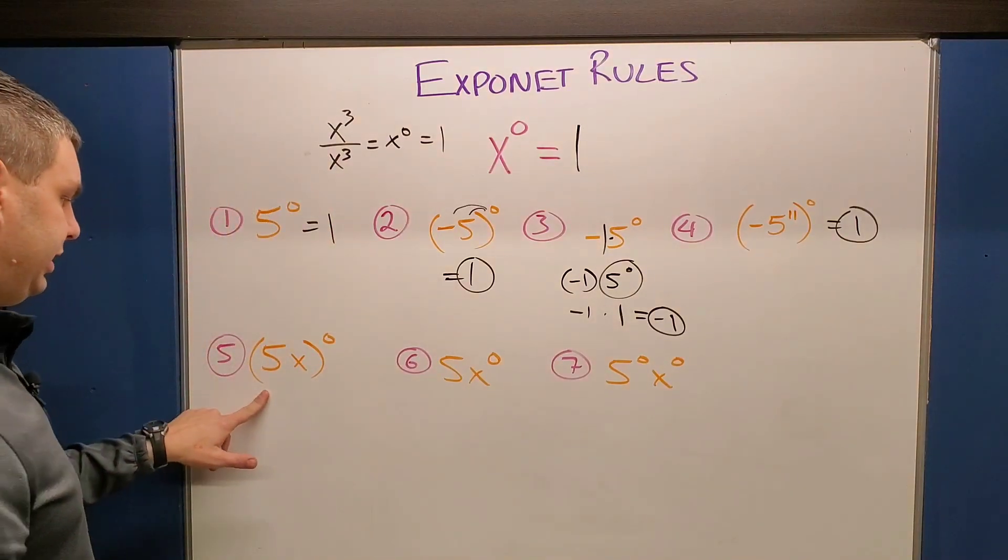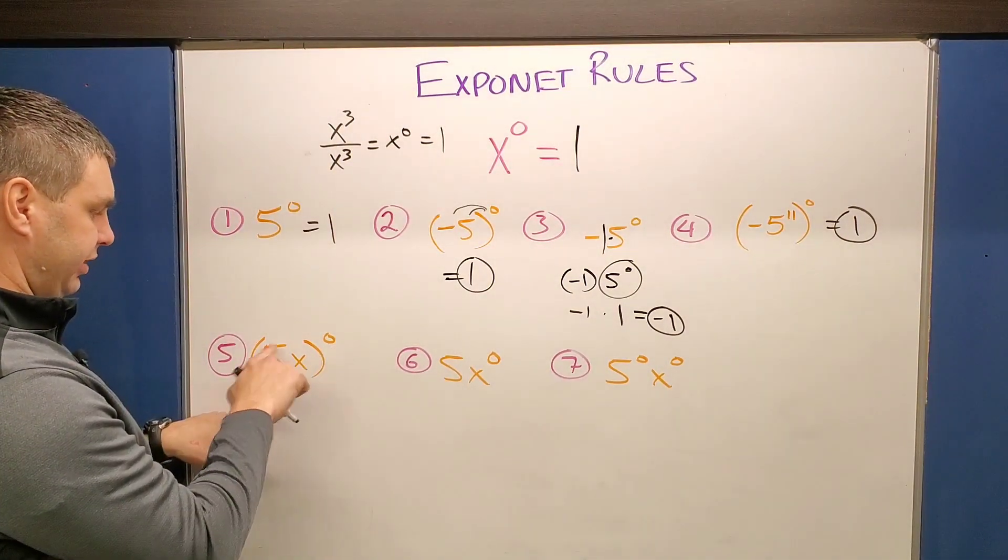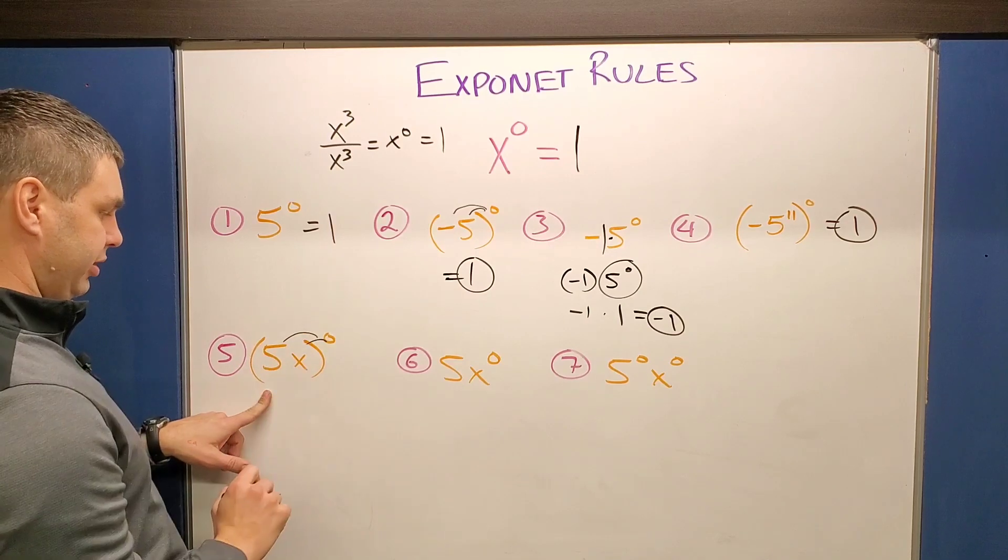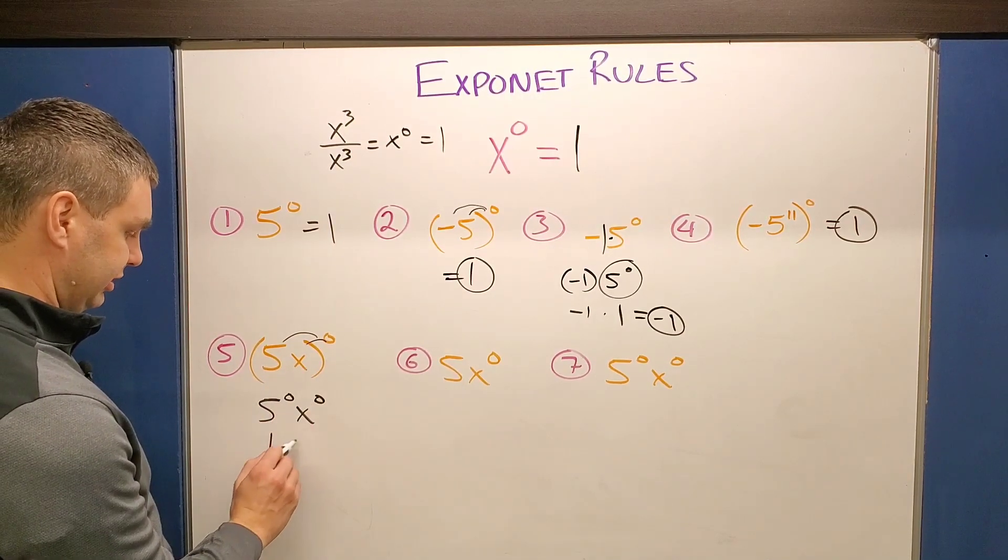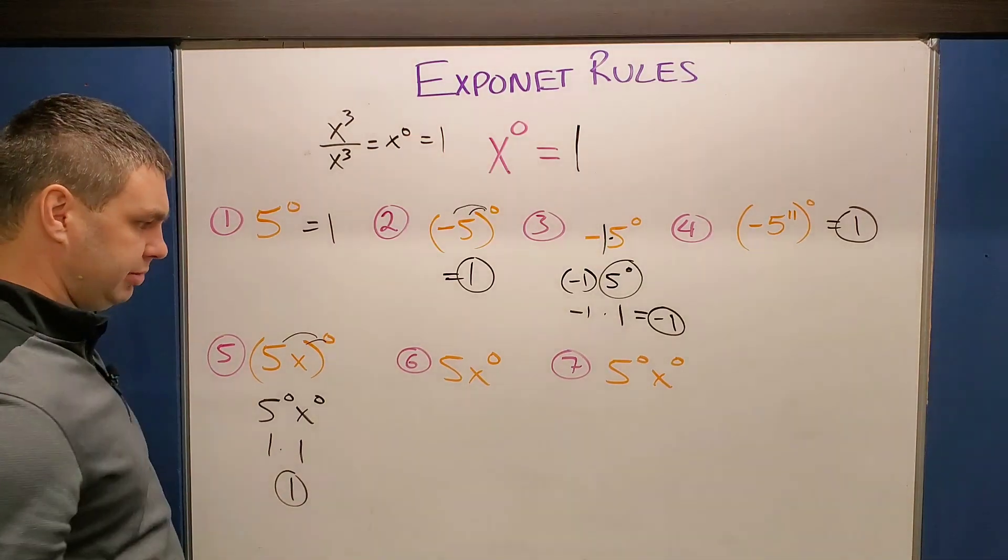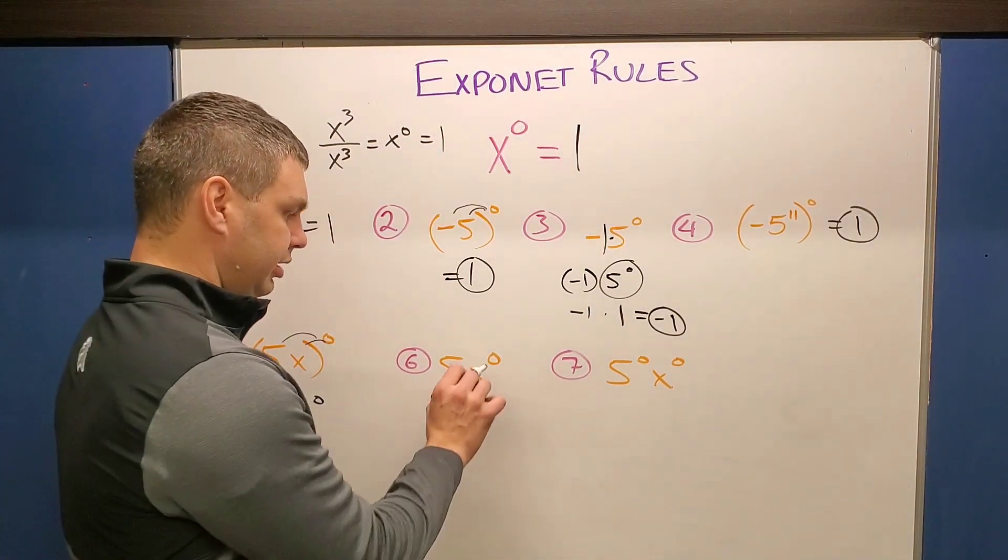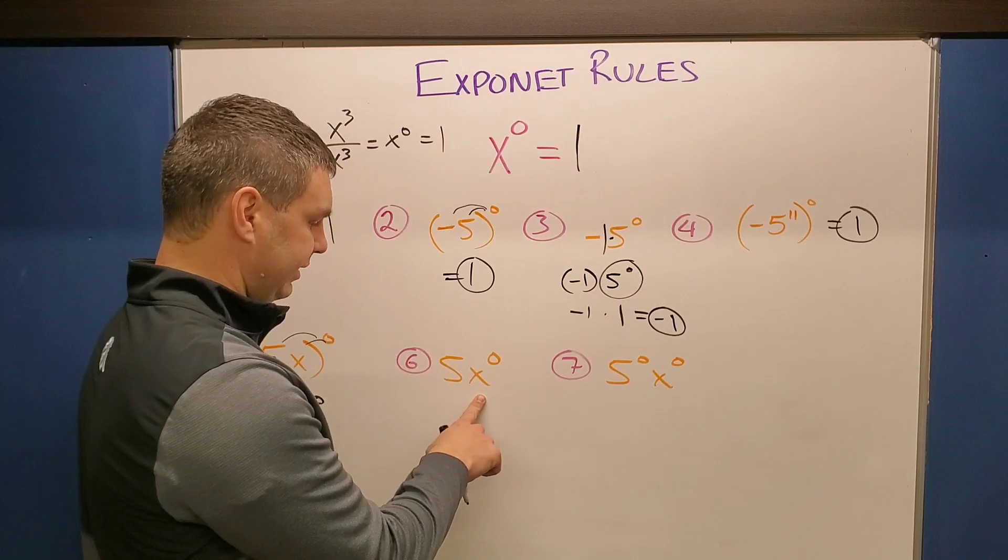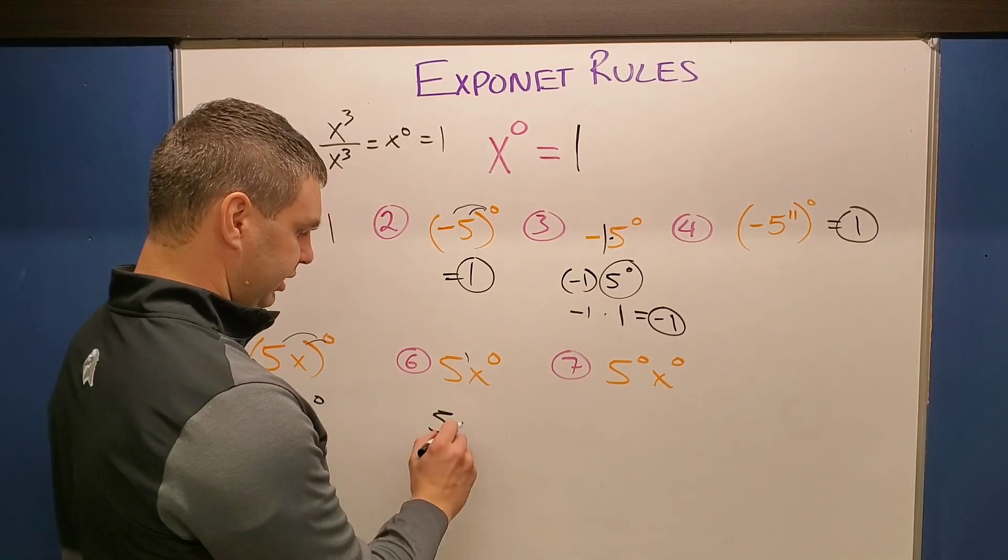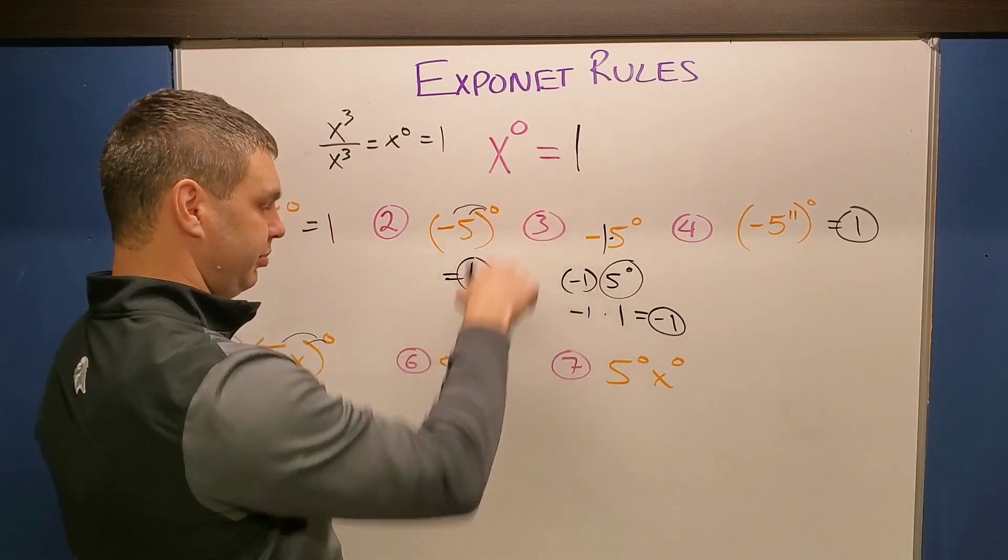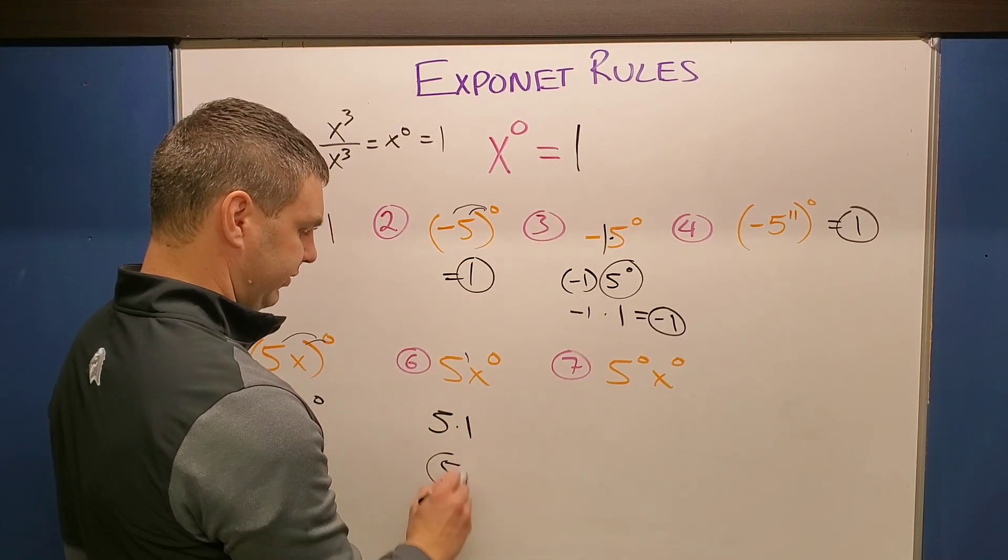Over here, same idea. It's affecting the five and the x if it's being applied to both of those. So you could say five to zero times x to zero, which is one times one, which again is one. Over here though, the zero is only being applied to the x. So I would say this is still five, or if you want to say five to the first times anything to the zero power is one and five times one is five.